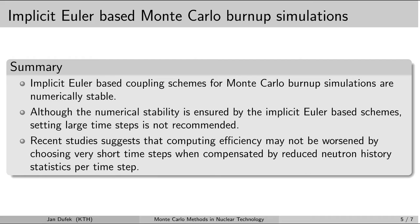To summarize: coupling schemes based on the implicit Euler method are numerically stable, and the stability is not conditioned by the length of the time step. Nevertheless, it is recommended to keep the time step length as short as possible, because if the time step is very large, the end-of-step neutron flux is not a good representation for the whole interval. The results, although stable, would not be very realistic.